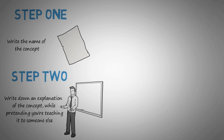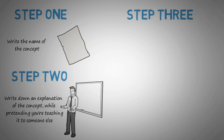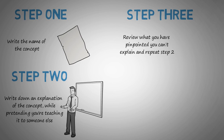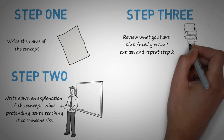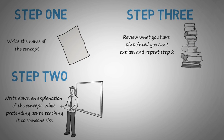This should highlight what you understand, but more importantly, pinpoint what you don't quite know. Step 3: Review what you have pinpointed you can't explain and repeat step 2. Go back to the source material, re-read it and relearn it. Repeat that process until you have explained the whole topic from start to end.